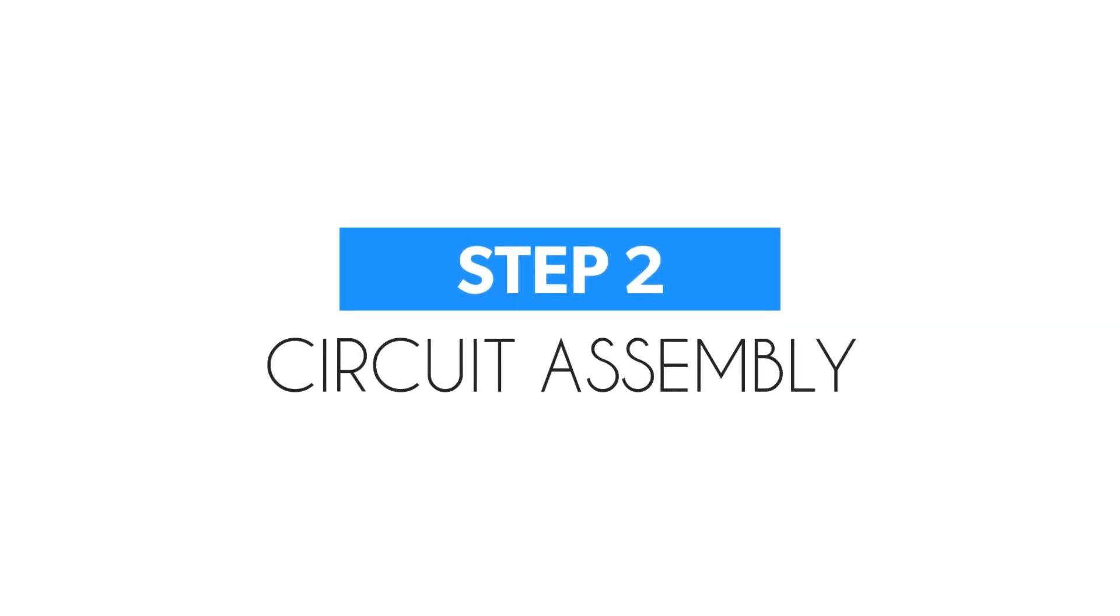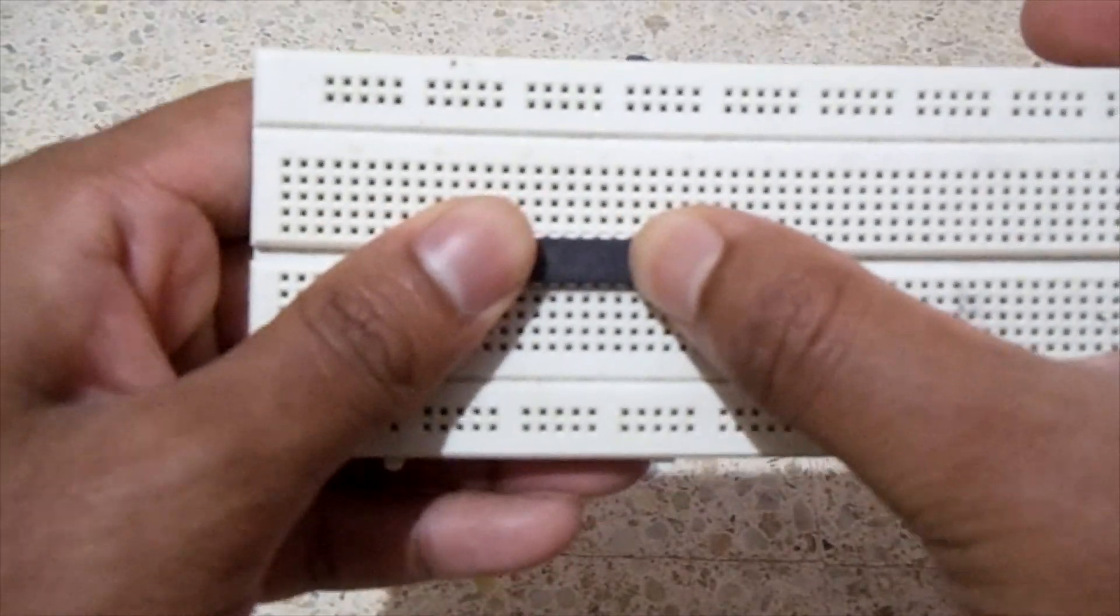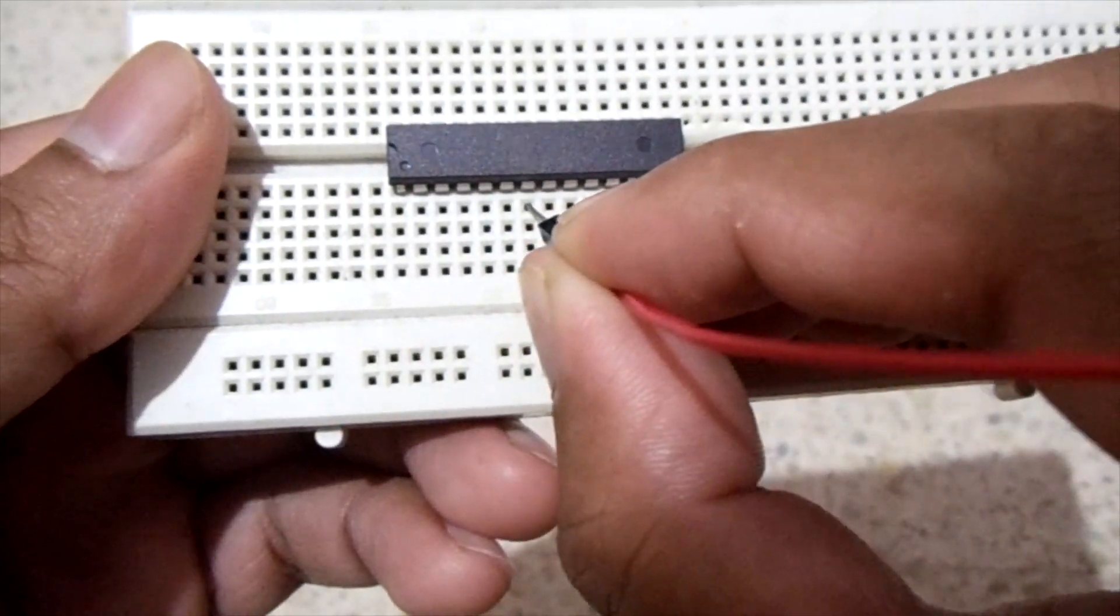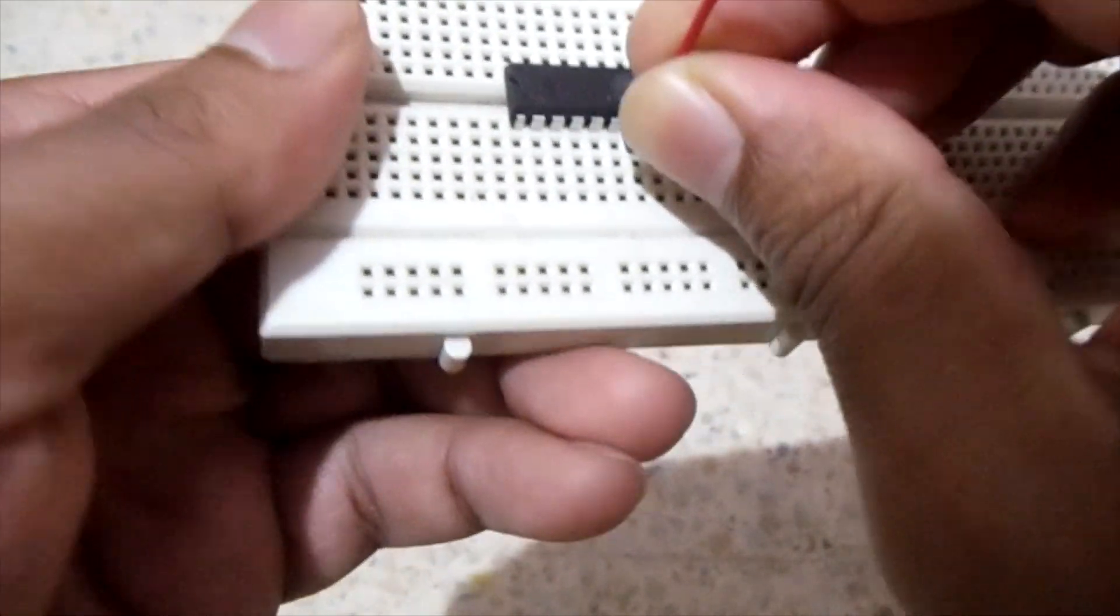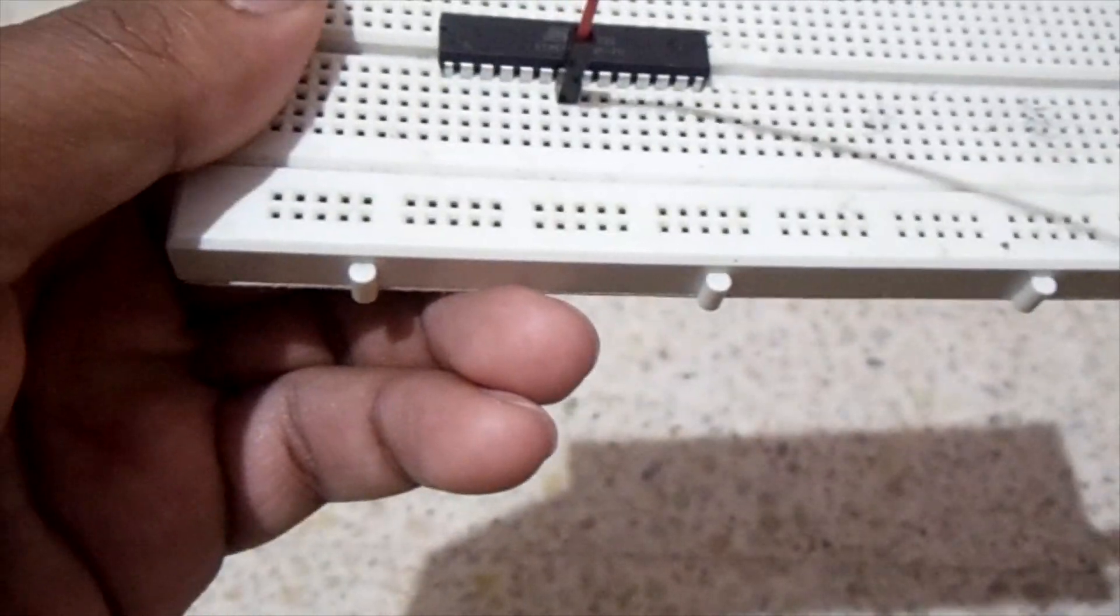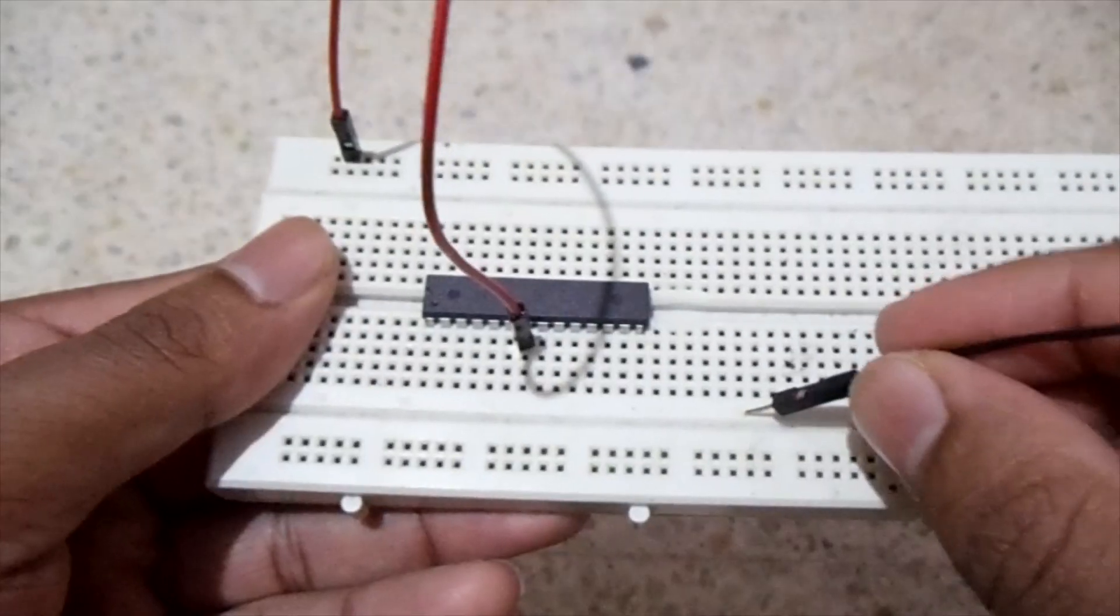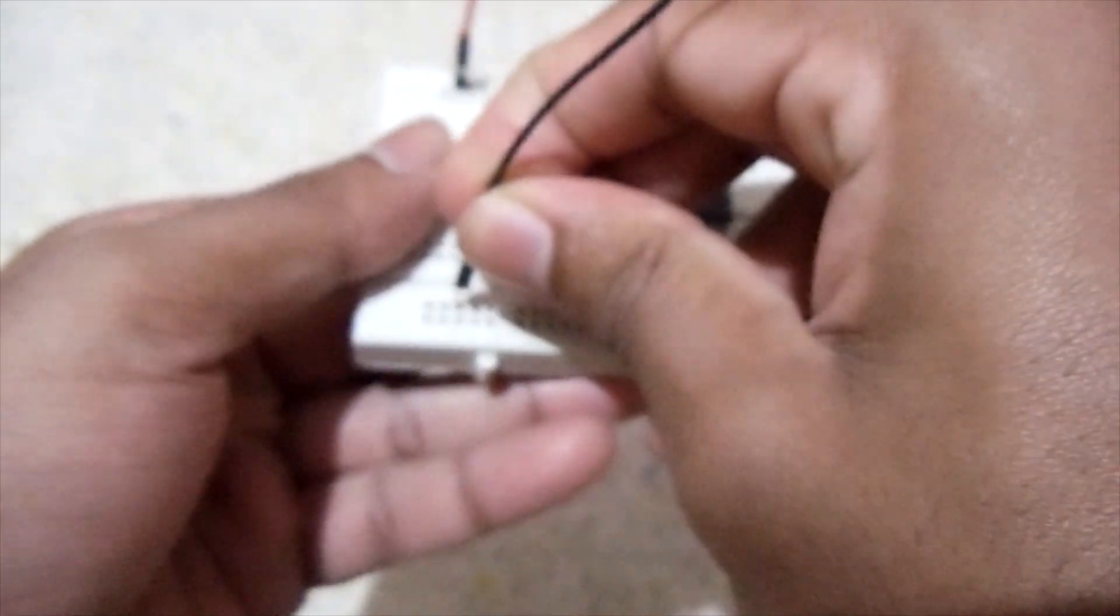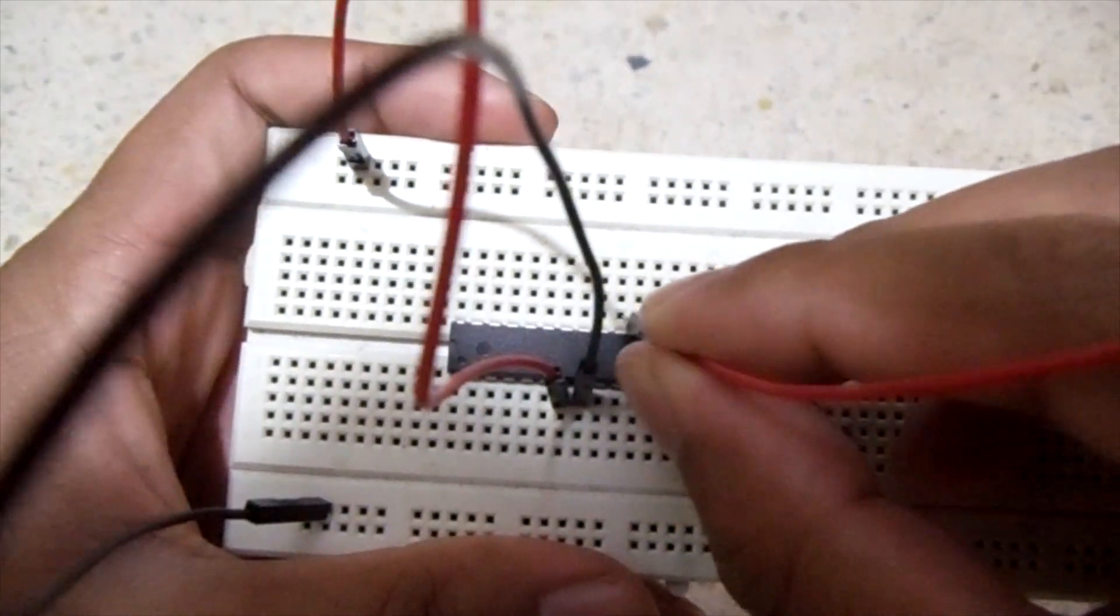Next is circuit assembly. Mount the ATmega328P on a breadboard. Then connect pin number 7 to VCC. Next connect pin number 8 to ground. Next connect pin number 22 to VCC.